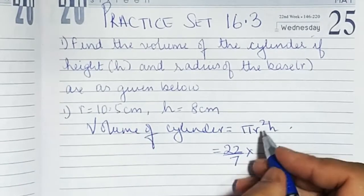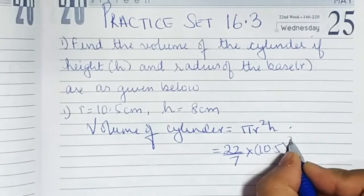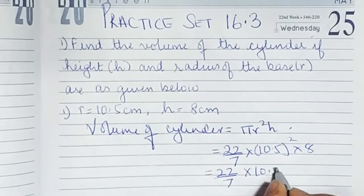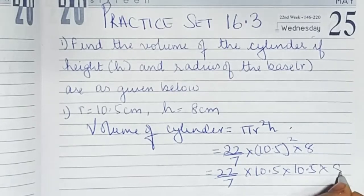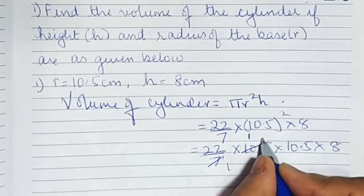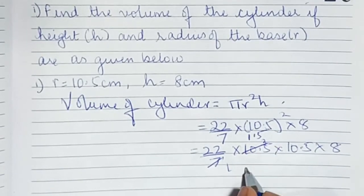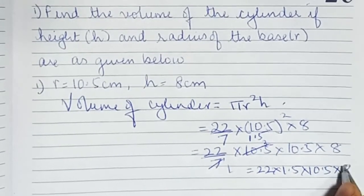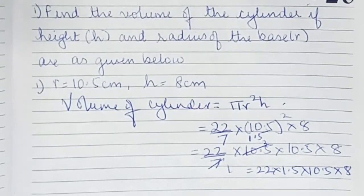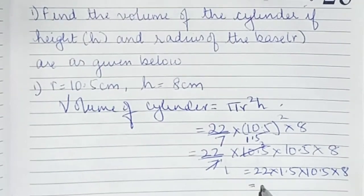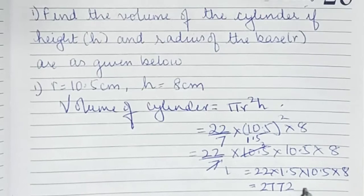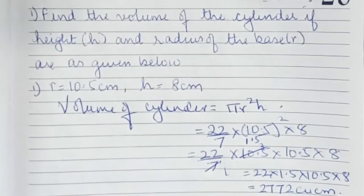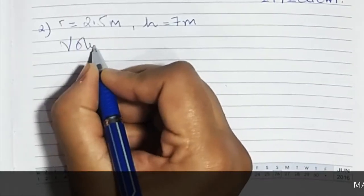The value for pi is 22 upon 7, r is 10.5, and h is 8. So, 22 upon 7 into 10.5 squared into 8. That gives us 22 upon 7 into 10.5 into 10.5 into 8. When we multiply all of this, the final answer we get is 2772 cubic centimeters.